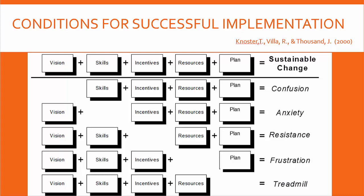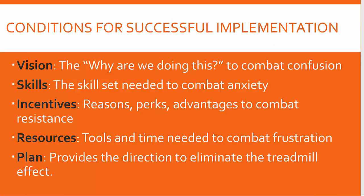Notice what happens when one of these things is missing. When the vision is missing, we have confusion — we don't know why we're doing what we're doing. When skills are missing, we feel stress and anxiety because we don't know how to do what we're being asked to do. When incentives are missing, there's resistance. When resources are missing, there's frustration. And when there's no solid plan, you feel like you're on a treadmill because you're not really getting anywhere.